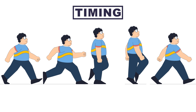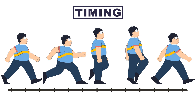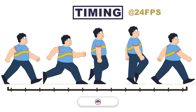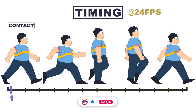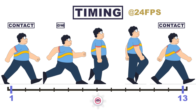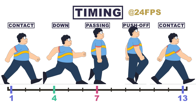The timing of a walk cycle is determined by the frame rate and the number of frames each of the key poses occupies. We used a frame rate of 24 fps, keeping the first contact pose at frame 1. The next contact pose will be at frame 13, the down pose at frame 4, the passing pose at frame 7, and the push off pose at frame 10.